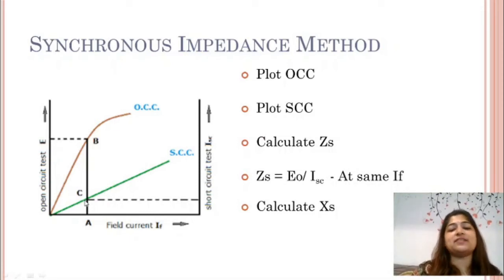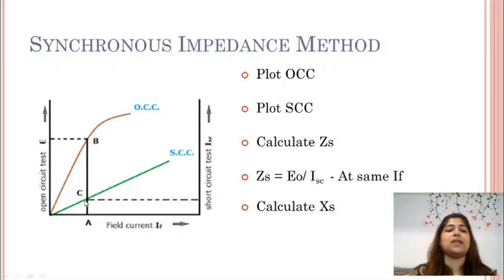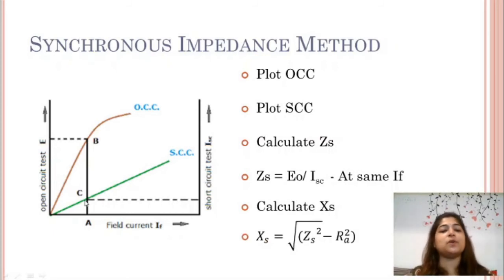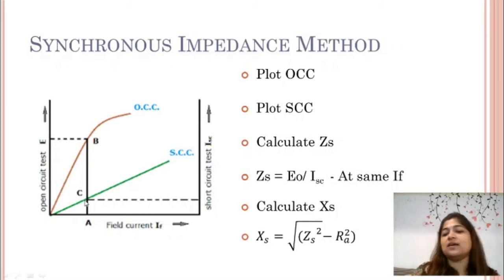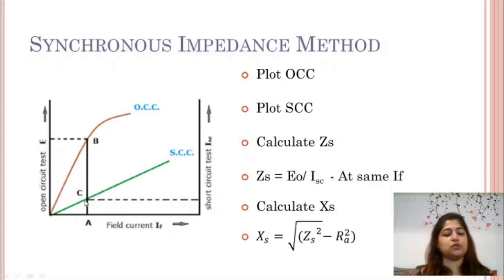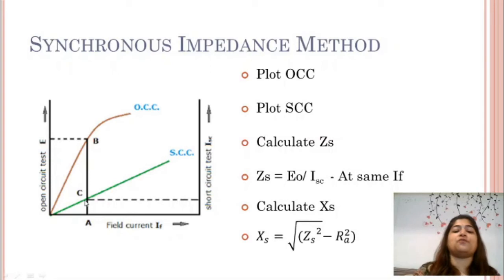Once we get the value of synchronous impedance ZS, we find synchronous reactance XS. Since RA² + XS² = ZS², then XS equals the square root of ZS² minus RA². This is how we get the value of XS. We now have RA, OCC, SCC, ZS, and XS.